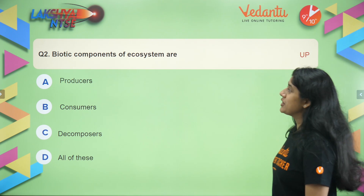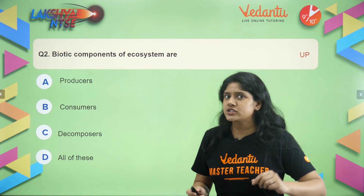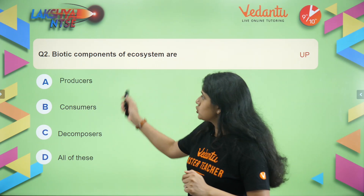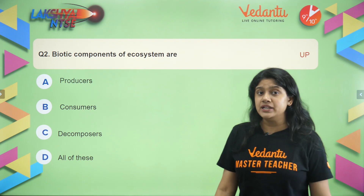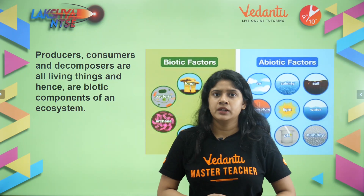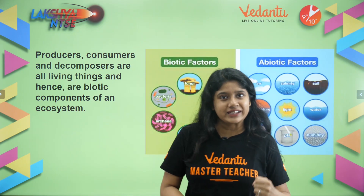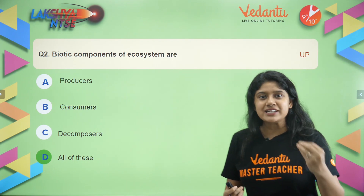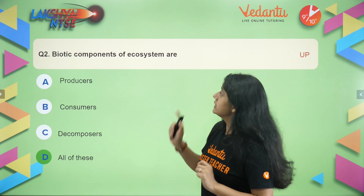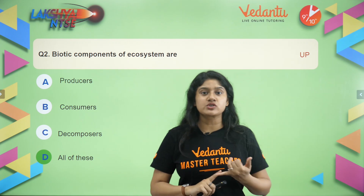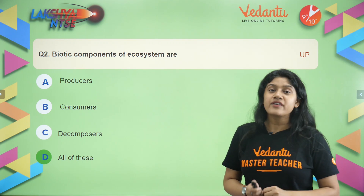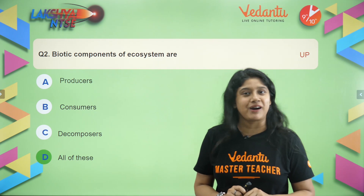Moving on to question number two: biotic components of an ecosystem. Biotic components are the living components, while abiotic components are the non-living ones. The biotic components include producers, consumers, and decomposers — all living organisms that make up the ecosystem. Producers produce food, consumers consume them, and decomposers break them down after they are dead. All of these are essential biotic components of the ecosystem.